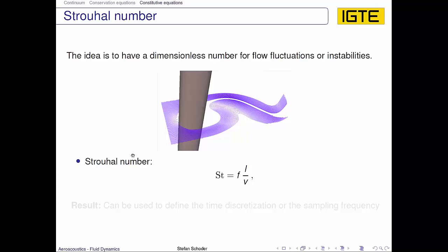some Strouhal number. The Strouhal number itself is equal to the frequency, which is the oscillation frequency here after the rod, and some characteristic length scale of the fluid, divided by the fluid velocity itself.